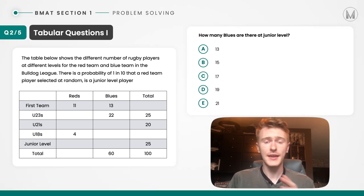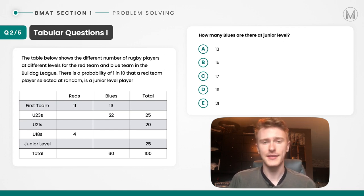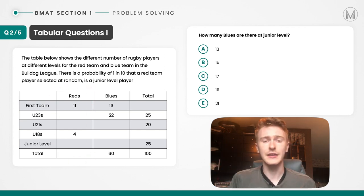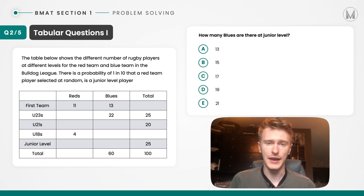Moving on to the next question. With this question, we're given some information before the table, and that's really important because it tells us there's a probability of one in ten that a red team player selected at random is a junior level player. In terms of the table, that means we're looking at the red column as our entire population, and we're looking at the junior level players cell. Whatever that probability is, junior level players divided by the total should equal one over ten.